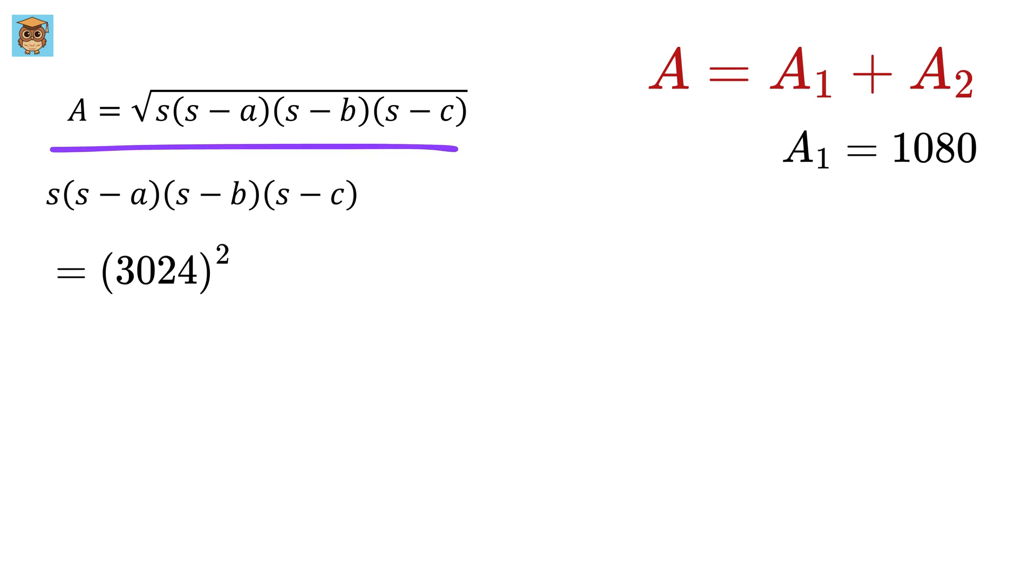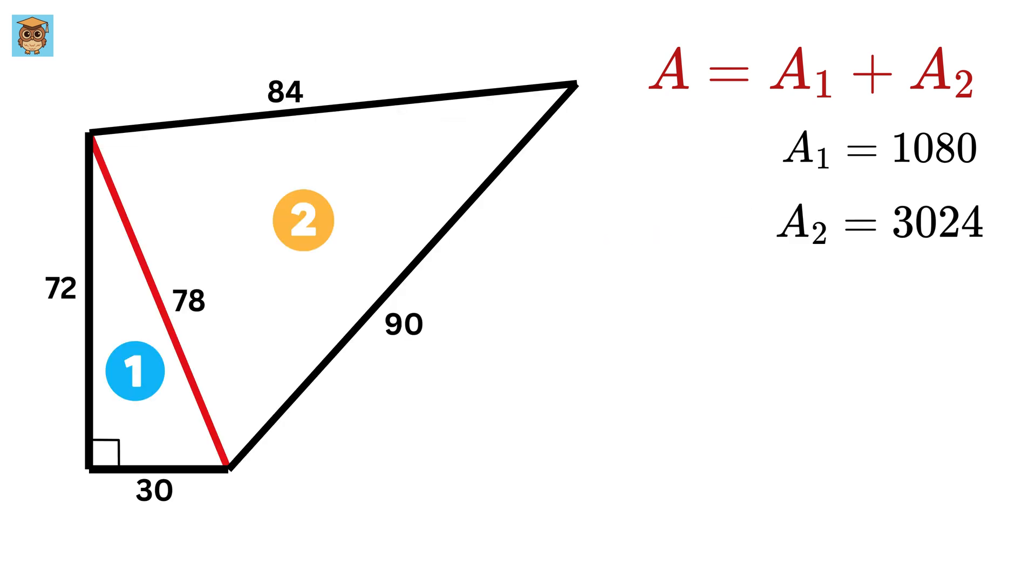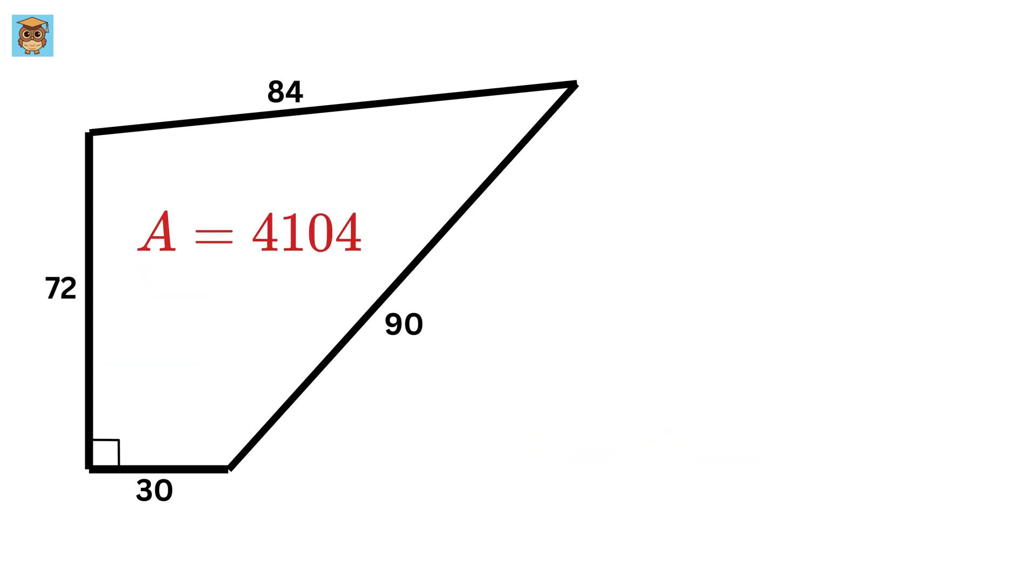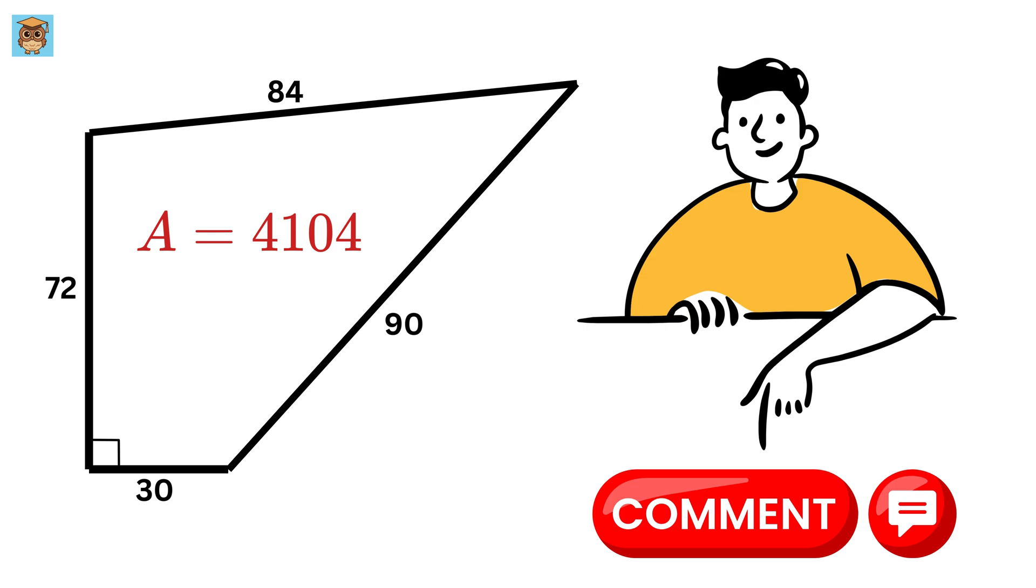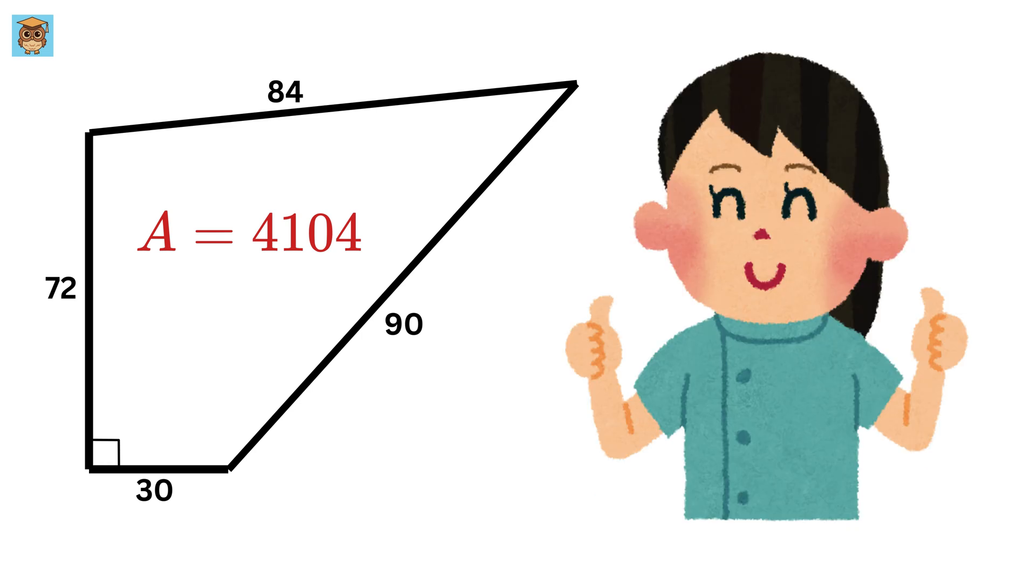Therefore, the total area of the quadrilateral will be equal to 1080 plus 3024, or 4104 square units. And that's it! Let me know in the comment if you were able to solve it on your own, and also don't forget to like and share this video.